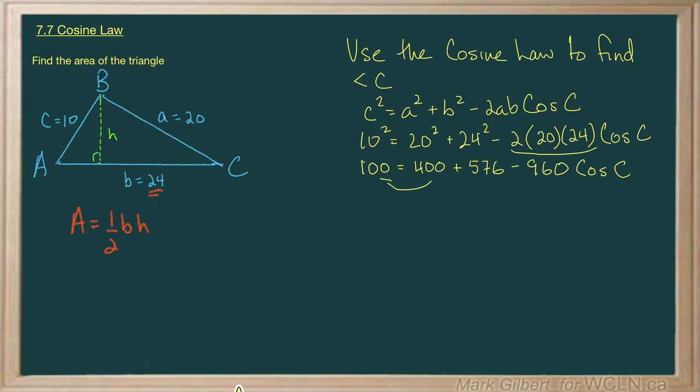Now I'm going to bring the 400 over as a negative, 576 over as a negative. Negative 876 equals negative 960 cosine C. So cosine C equals 876 divided by 960. We divide both sides by 960. And then angle C, I'll multiply this out.